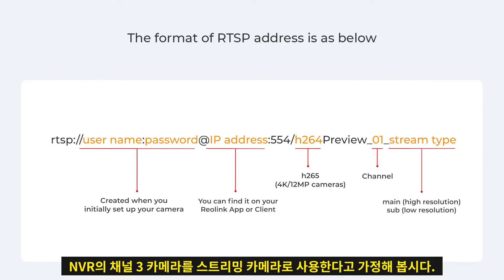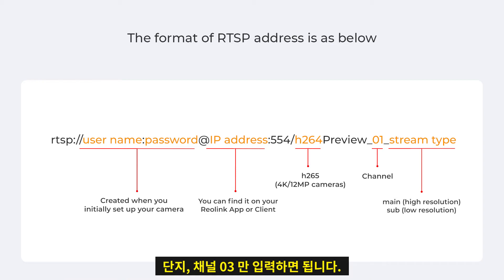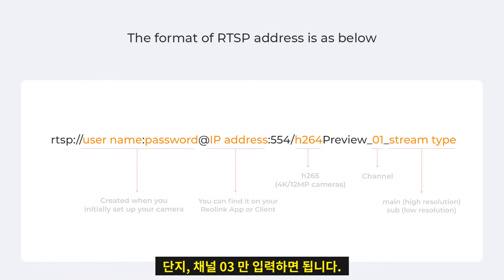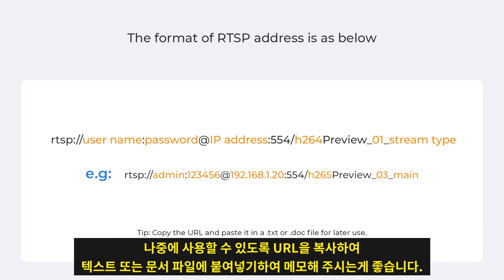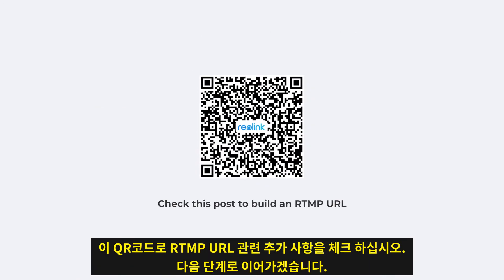Suppose it's the Channel 3 camera on the NVR, so we input 03. I recommend you copy the URL and paste it into a text or doc file for later use. You can also check this post to build an RTMP URL.